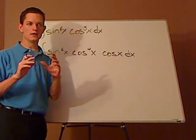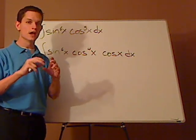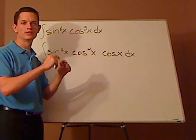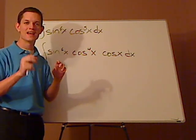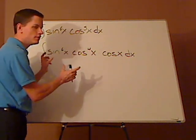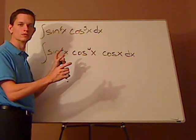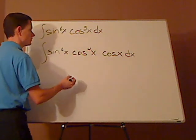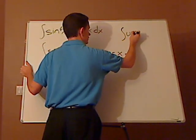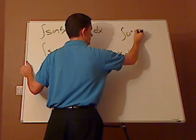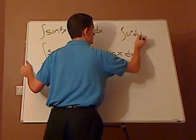If you get it in a way so that you have sine raised to a certain power times cosine x dx, then you can just simply apply the power rule because it will be in this form. It will be in the integral u raised to some number n du.